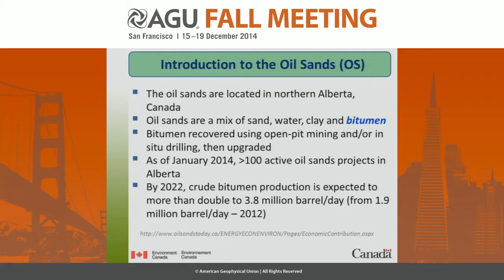As of January this year, there are more than 100 active oil sands projects in Alberta, and it's expected by 2022 that crude bitumen production is going to more than double, although at today's oil prices, I'm not so sure.